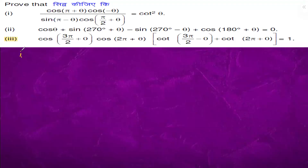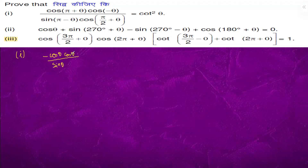Question 1: cos(π - θ) is -cos θ, cos(-θ) is cos θ, sin(π - θ) is sin θ, cos(π/2 + θ) is -sin θ. So the expression equals cot² θ.